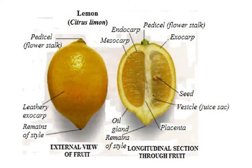Here is a diagram of a lemon. What you need to be clear about is that the ovary wall becomes the fruit wall. The ovary wall, called the fruit wall, is called the pericarp, and the pericarp is made of the endocarp and mesocarp. You need to know that the pericarp is the fruit wall.